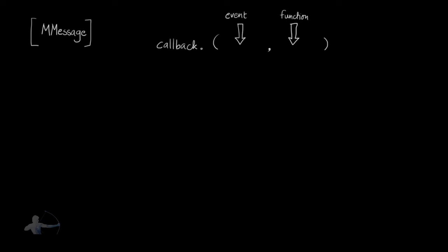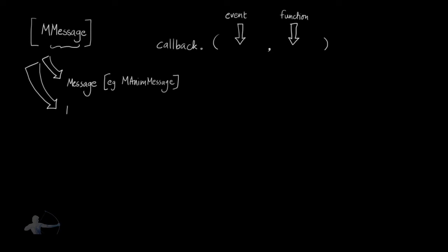In the base class for creating callbacks, we see the 'message' keyword. Even in the derived classes we see the 'message' keyword — for example, MAnimMessage and MCommandMessage. Conceptually, whenever a particular event occurs, a message is generated which is listened to by the callback, and based on that the function is executed. Callbacks can be removed at any point.